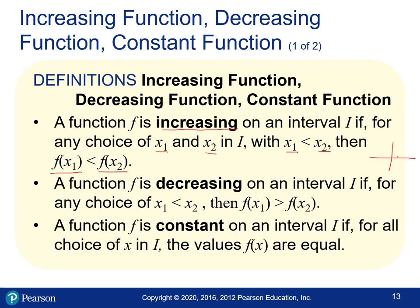Let me reword that. If you think about your x-axis and you have one x-value and then another x-value to the right of it — so one is less than the other — then the y-values, which are f(x) values, the one corresponding to the smaller x is also smaller. So your second y-value has to be bigger, meaning the function goes up toward the right.